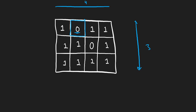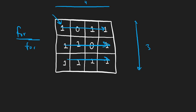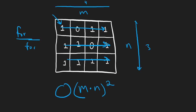We repeat that process for every single cell in the grid. For a zero, we can't even make a one-by-one square, so we don't even have to check the neighbors. This method requires nested for loops — starting at each one, we potentially have to go through the entire grid. The time complexity is going to be M times N for the grid size, times M times N again for every single cell. So it's M by N squared — pretty inefficient.